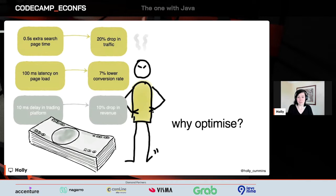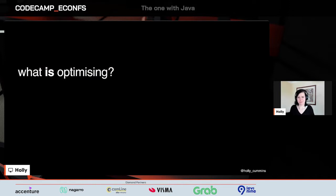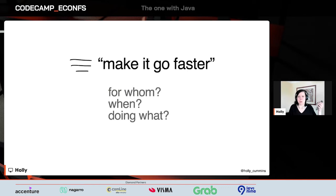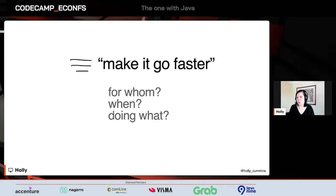What is optimizing? Really, when we say optimize, what we mean is: please make it go faster. But that's not actually as easy as it sounds, because faster isn't a uniform thing. When we think about faster, we need to think: for whom am I making it go faster? When am I making it go faster? What is this person doing? It seems like a technical problem, but there's actually a really big people element as well.